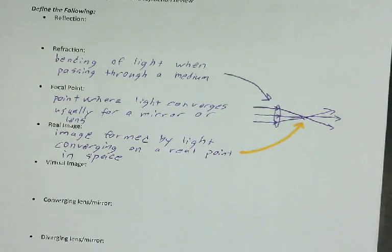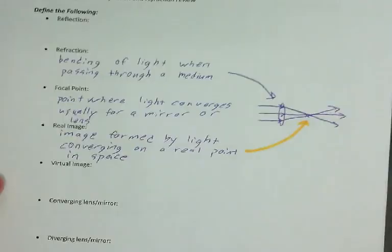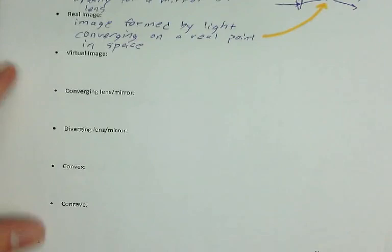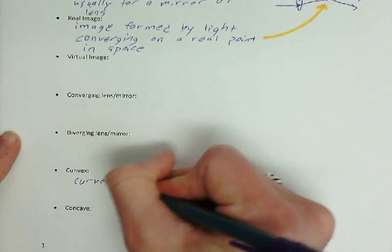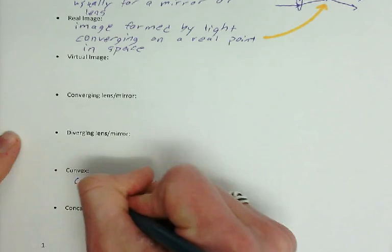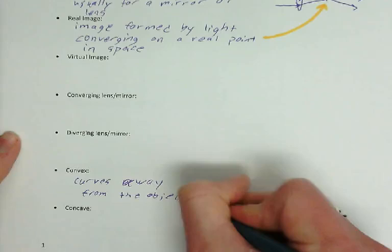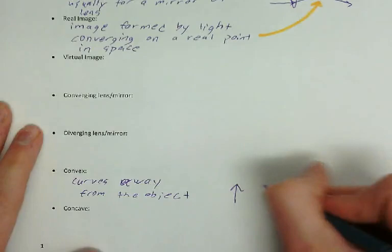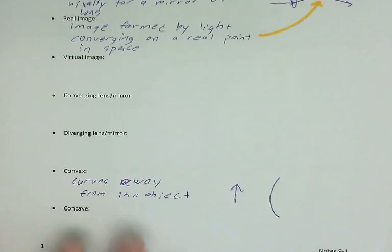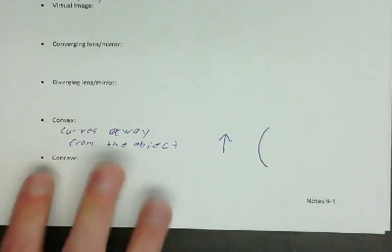Logan, what about something else? Convex is like near the curve. Yeah, so convex curves away from the object. So if here's my object, it's an arrow, convex bends away from that. So that would be convex. Bending away is convex.